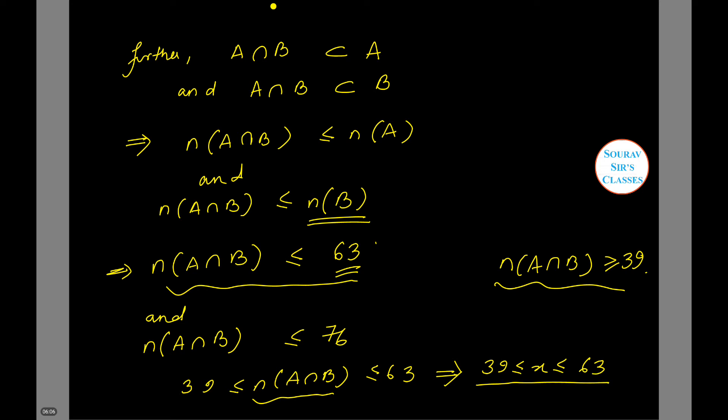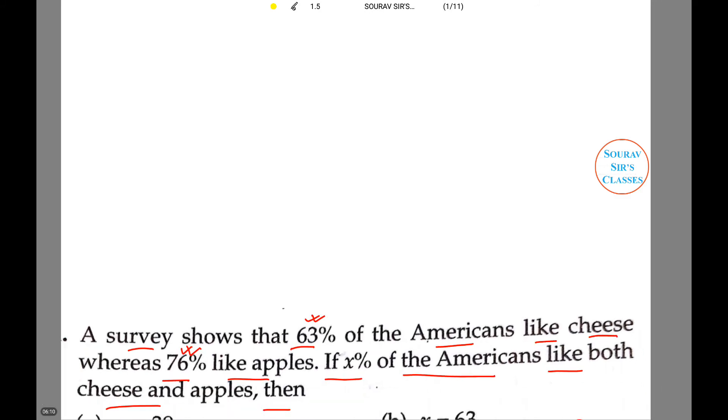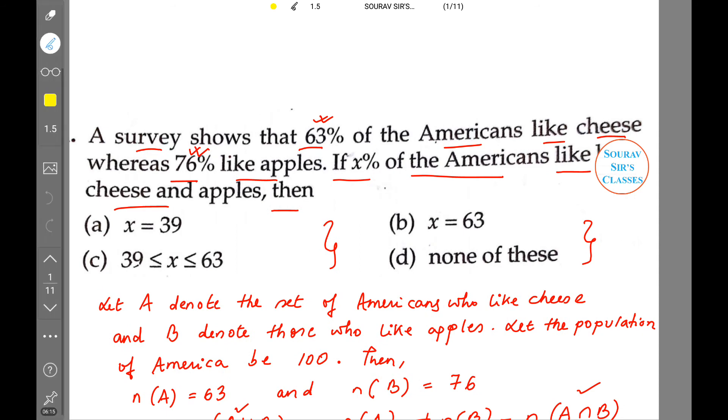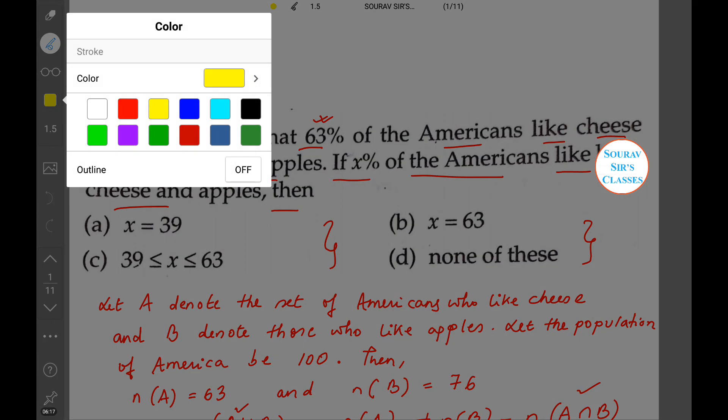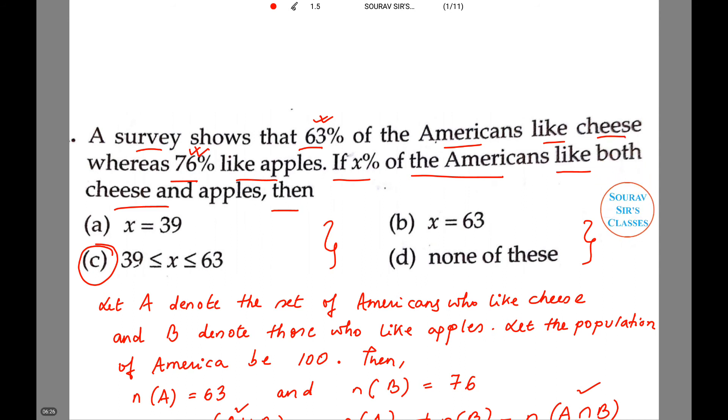Now let us check the options given to us. We can clearly say that C is the correct answer for this particular question. So the percentage of Americans who like both cheese and apple lies between this range.